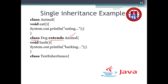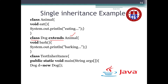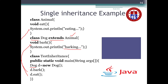I am creating one class for the main function. My class name is TestInheritance. In the main function I am creating an object for the derived class Dog — my object name is d. Now I am calling both methods: d.bark() will call the bark method and print 'barking', and d.eat() will call the eat method and print 'eating'. So the output of this program is: first 'barking' is printed followed by 'eating'.